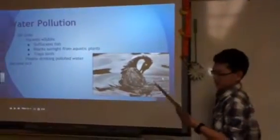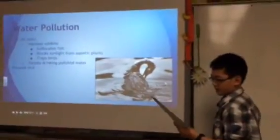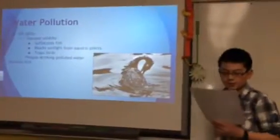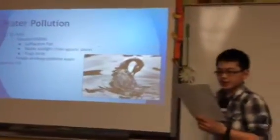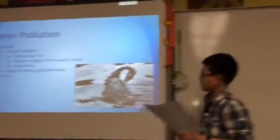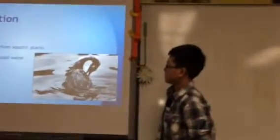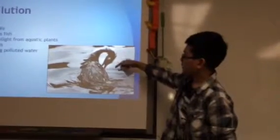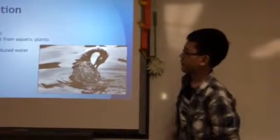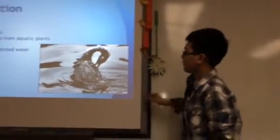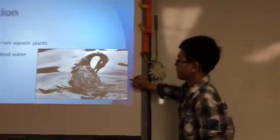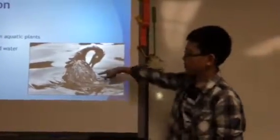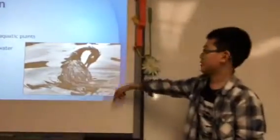Water pollution usually comes from oil spills. It harms mostly wildlife, and the cost to clean up these spills is enormous. It can kill fish by suffocating them, it blocks out the sunlight from plants like seaweed, and it traps birds, like in this picture.